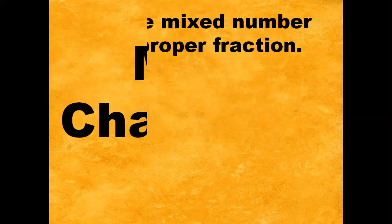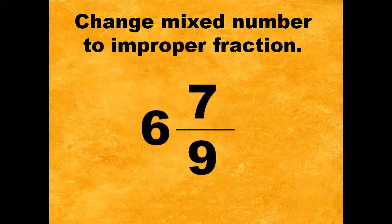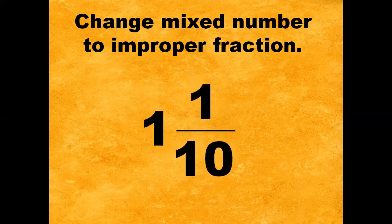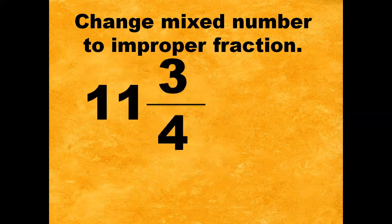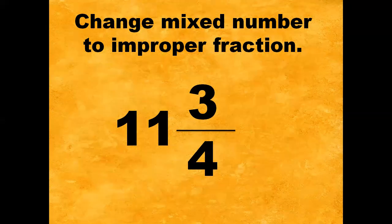Now it's your turn. Let's have a math challenge. Change the mixed numbers to improper fractions. Number one: 6 and 7/9. Number two: 1 and 1/10. Number three: 11 and 3/4. If you are done, just comment your answer in the comment box.